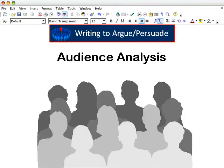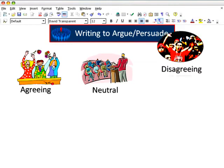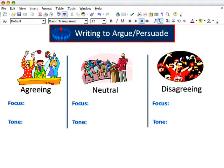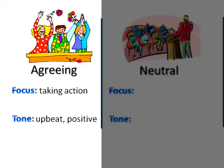Another important consideration is your audience — those whom you're trying to persuade. For an argument essay, audiences can be divided into three categories. First, the agreeing audience. Most already accept your basic position. Thus, your focus might be to convince this group to take action toward your goal. This audience would need the sobering statistics and the gruesome photos of carnage caused by drunk drivers. Your tone would be upbeat and positive as you encourage them to take action.